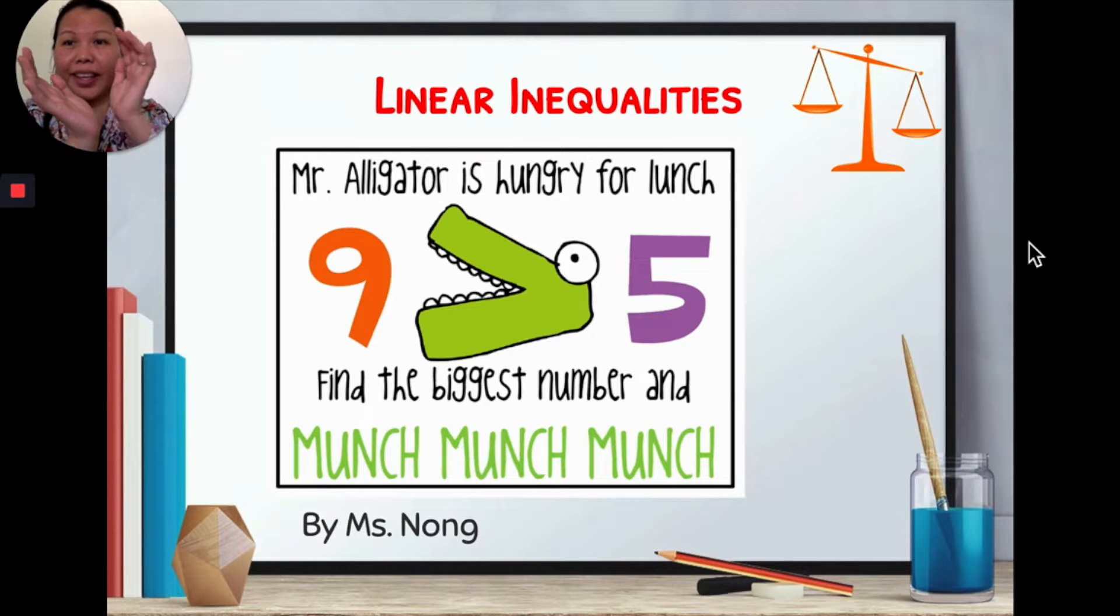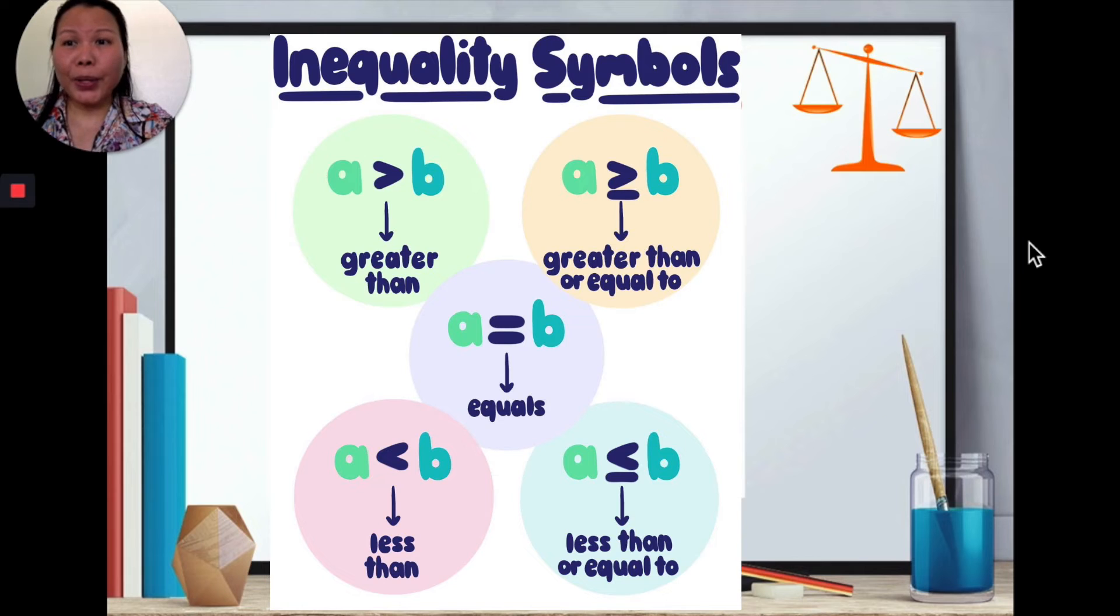The sharp end is the smaller and the mouth is open toward the higher quantity. You can think of the alligator is hungry, it's greedy or something like that to help you remember which way do I turn for less or for more.